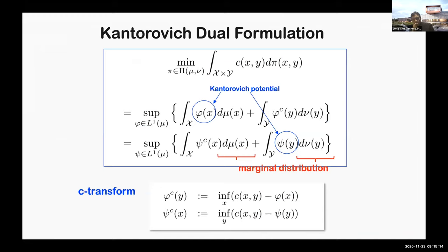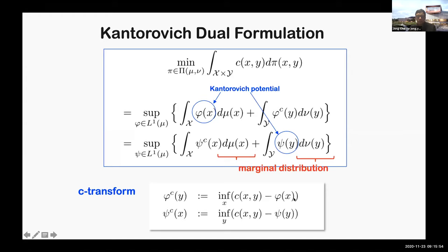Another important advantage of the Kantorovich formulation is that it allows a dual formulation. The original primal OT formulation estimates the joint distribution under the constraint of marginal distributions. The dual problem is formulated with respect to the marginal distributions, which is much simpler. To allow such simplification, the dual maximizes with respect to the so-called Kantorovich potential and its C-transform, defined by a specific equation. This C-transform is trivial for the special case of squared-norm transportation costs; otherwise we need a tweak to handle it.